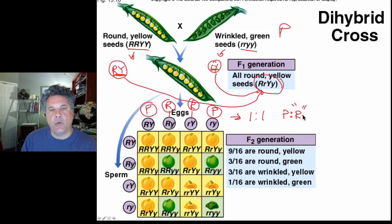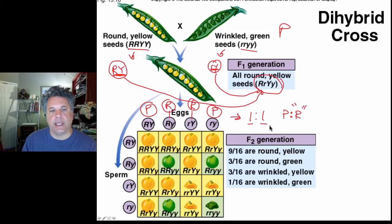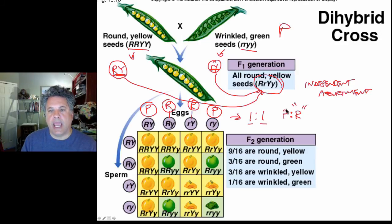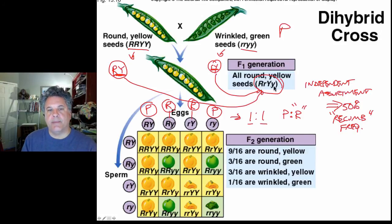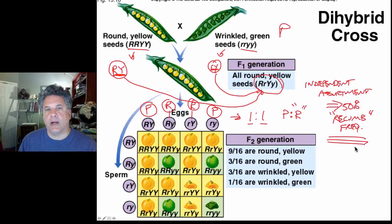We have a 50% recombination frequency — in quotes — when talking about independent assortment, because independent assortment shuffles alleles such that there are two parental genotypes and two recombinant ones in equal proportions. This is important to remember when moving on to discussing linkage.